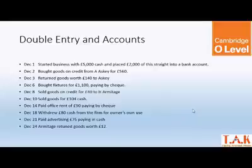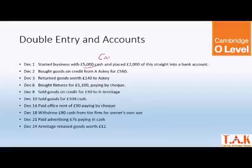December 1: started business with £5,000 cash and placed £2,000 straight into the bank account. What is this entry? First entry will be capital credit £5,000, and cash debit £5,000.